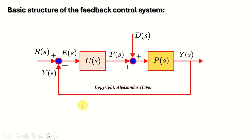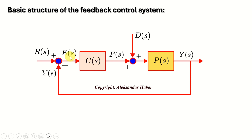Before we start with the Simulink and MATLAB implementation, it is first very important to revise the basic structure of the feedback control system. You can see the basic feedback control system in the Laplace complex domain. Y(s) is the output of the system, D(s) is the external input disturbance affecting the system, C(s) is the transfer function of the controller — in our case, the PID controller — and P(s) is the transfer function of the plant. F(s) is the output of the controller, E(s) is the control error, R(s) is the reference signal, and the error is simply equal to R(s) minus Y(s).